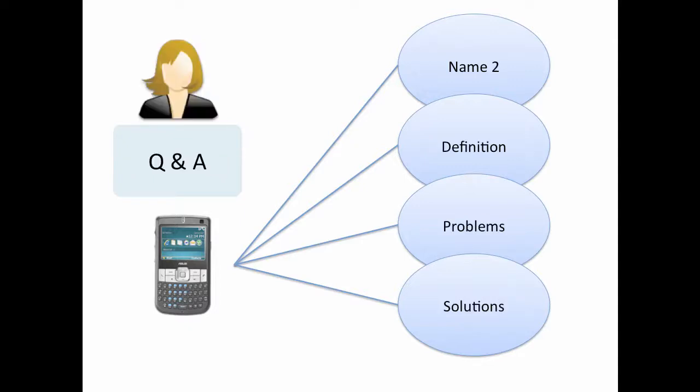Now, the very same phone has other properties that are interesting for the quality assurance department. They might call it by a more specific name like smartphone one 6GS, have a different definition for it, and relate it to concepts representing known problems and their solutions.